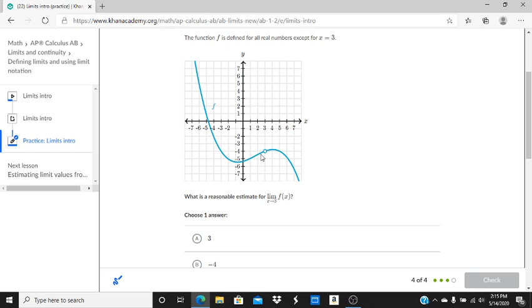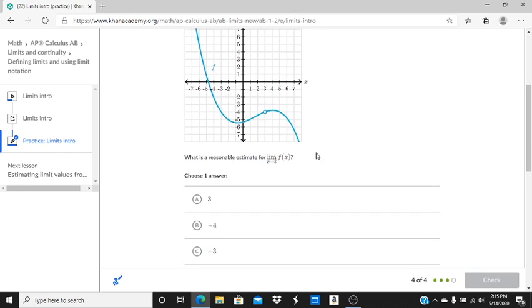So from the left-hand side, it's approaching negative 4. We're seeing we're getting closer to this value here, negative 4. And from the right-hand side, we're also approaching negative 4. So a reasonable estimate for the limit is negative 4.